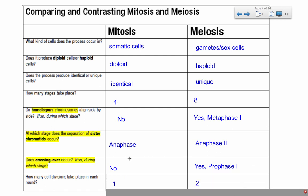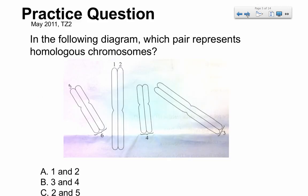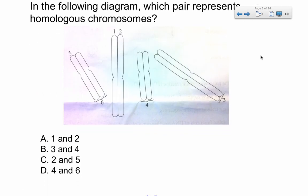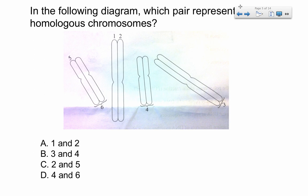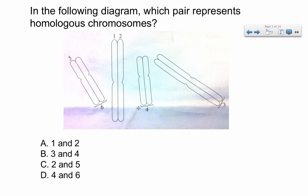That should give you a nice overview of the differences between mitosis and meiosis so you don't get confused about them in the future. Here is a question to take a look at: in the following diagram, which pair represents homologous chromosomes? Looking at one and two — these look like two sister chromatids, but this is still one chromosome. Four is one chromosome, three is one chromosome, and six is one chromosome. Each of these chromosomes consists of two sister chromatids.